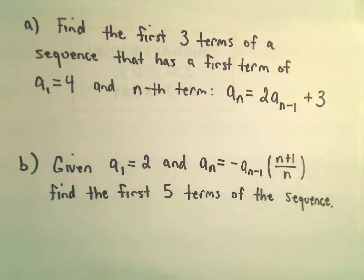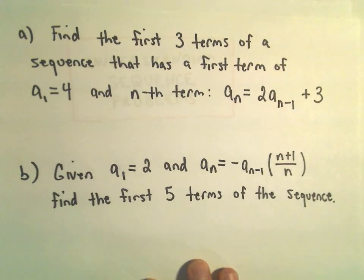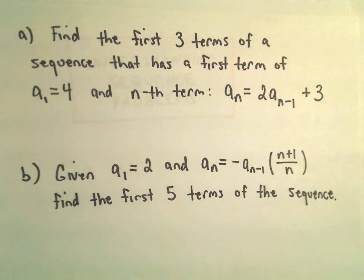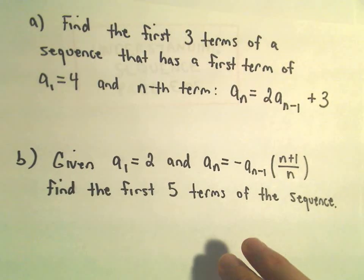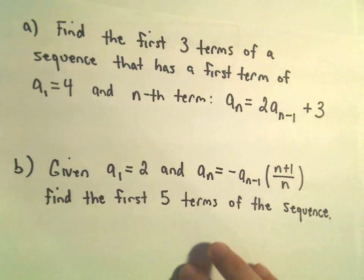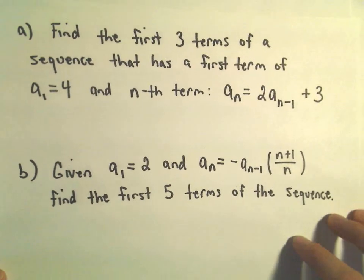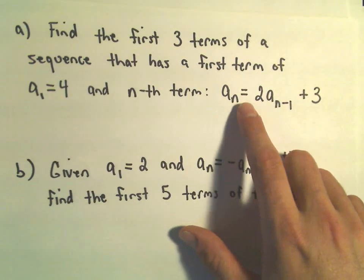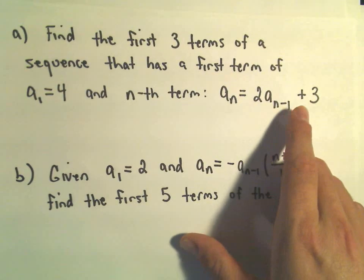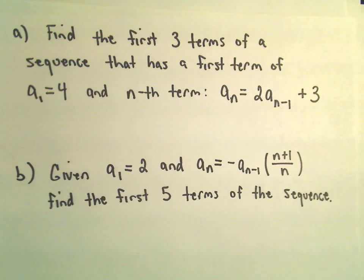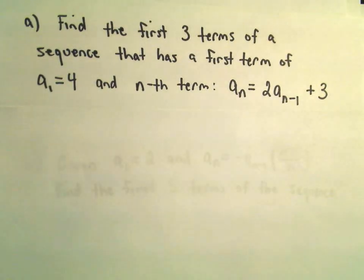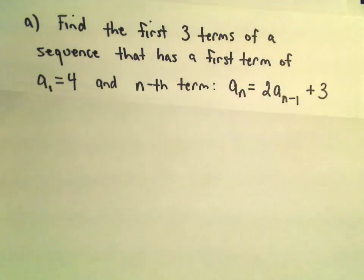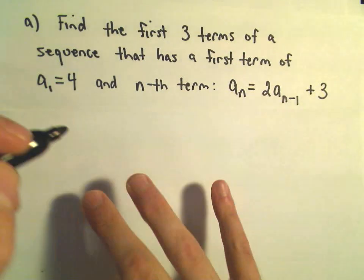Another example of finding the first few terms of a sequence. Here we're going to do Part A, and what we want to do is find the first three terms of a sequence that has a first term of 4 — so a sub 1 equals 4 — and generically our nth term a sub n is going to equal 2 times a sub n minus 1 plus 3. Basically, to figure out new terms, you have to know the preceding terms, but we've got that little bit of information, so it should not be too much of a problem.